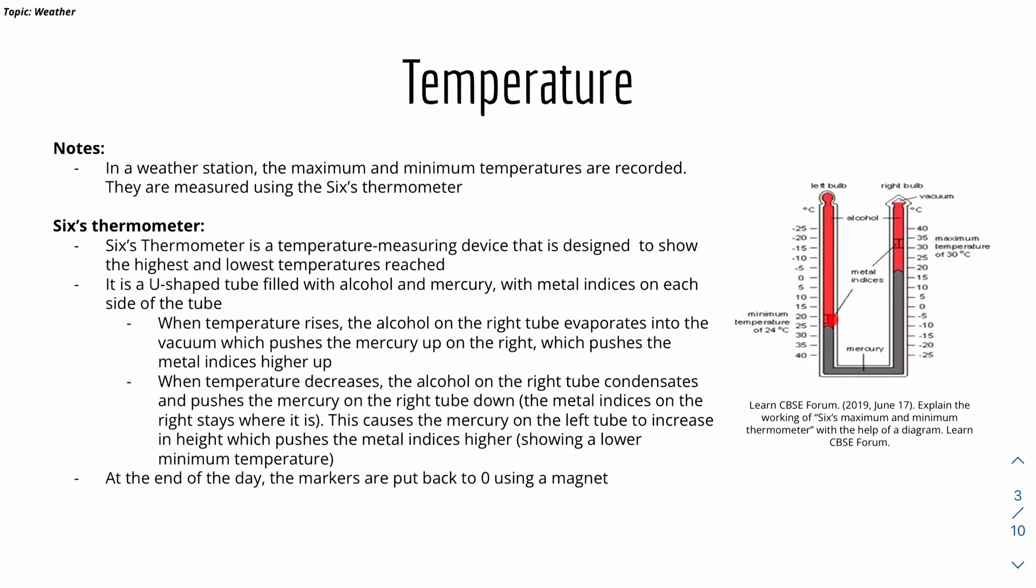This consequently goes down. But when temperature decreases, the alcohol in this little vacuum basically condensates, and it pushes the mercury down, and this side rises up, which means that the metal indices on this side, which shows the minimum temperature, will be pushed up.